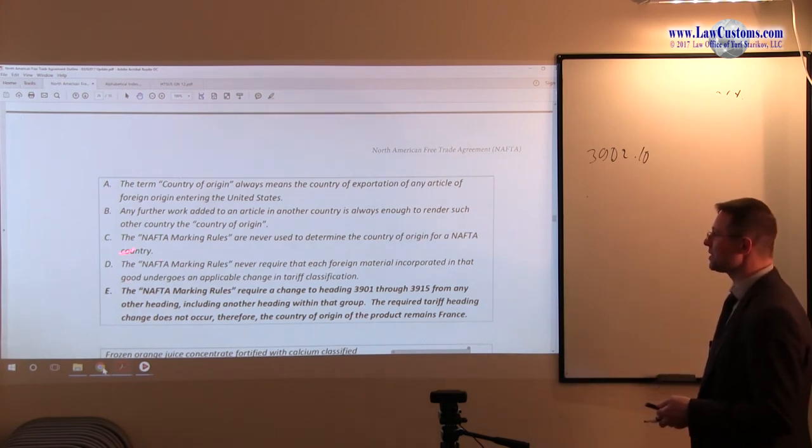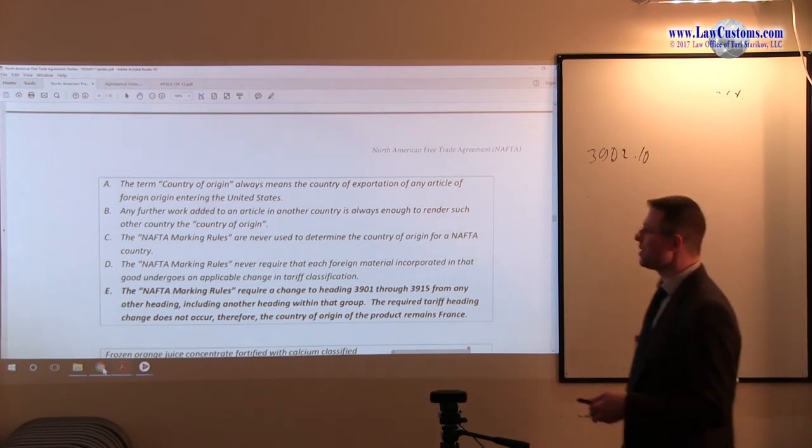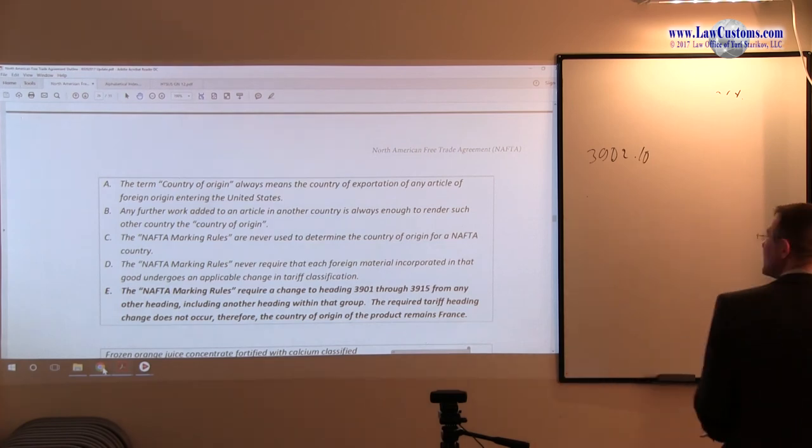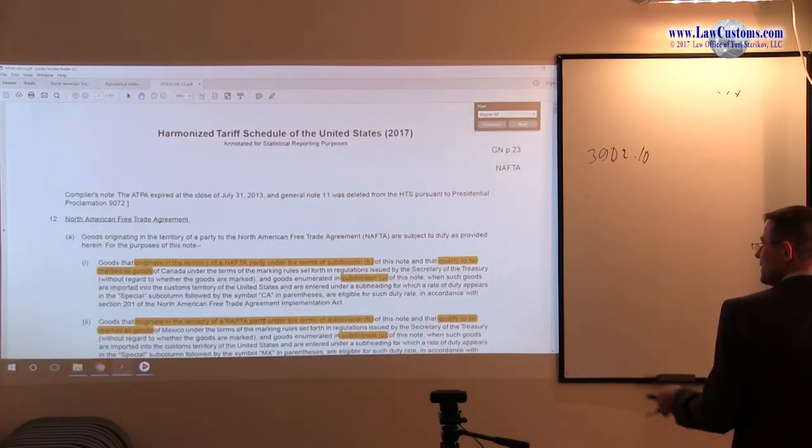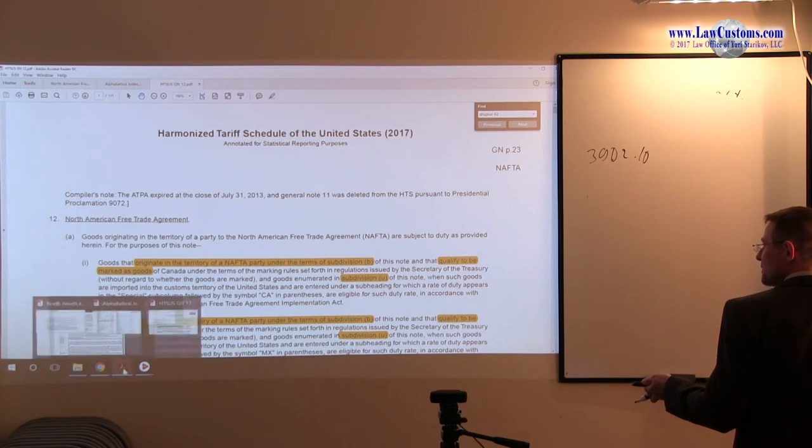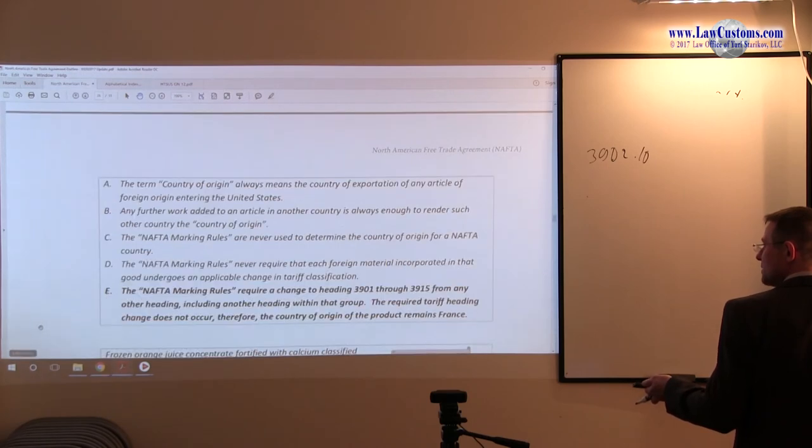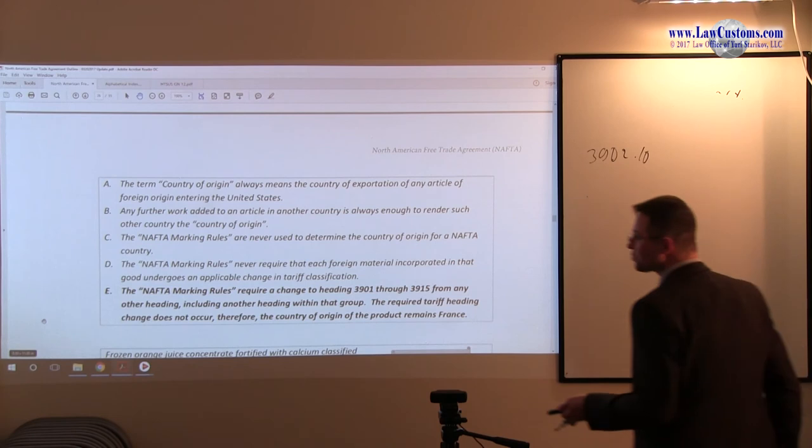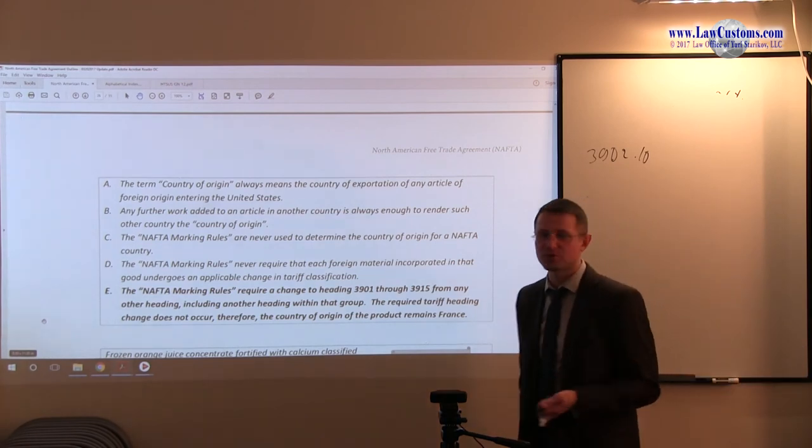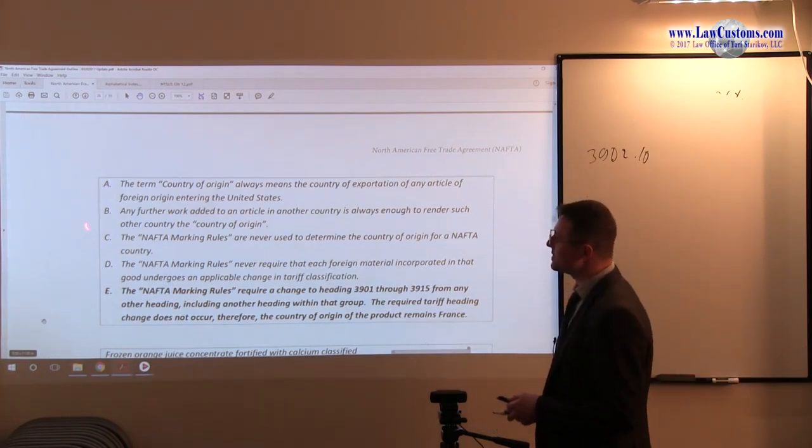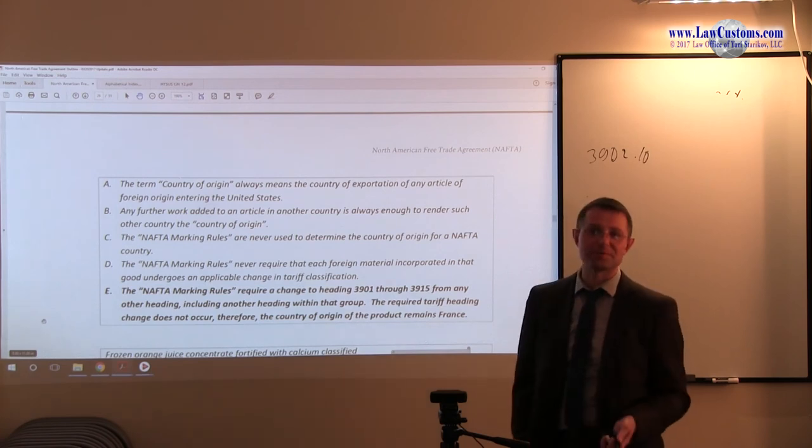The NAFTA marking rules never require that each foreign material incorporated undergoes tariff classification. We just saw the table, it's all over the chart. So D is not correct. Then we skipped over C. The NAFTA marking rules are never used to determine the country of origin for NAFTA? No, we saw in general note 12 that NAFTA marking is in part a requirement for determining the proper qualification of that product for NAFTA preferential duty. So C is not correct, so E is the only one left.